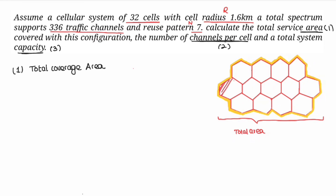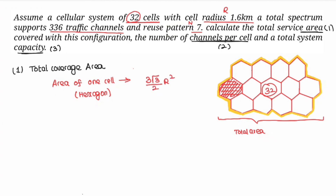For the total coverage area, the formula for area of one hexagonal cell is: 3 times root 3 divided by 2, times r squared. This is our formula. The given radius r is 1.6 km. Substituting: 3 into root 3 into 1.6 squared, divided by 2.